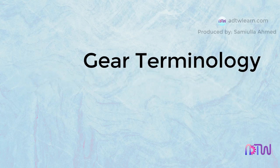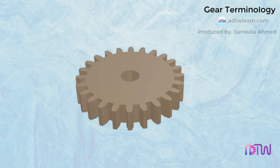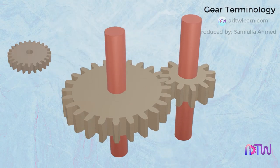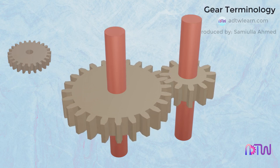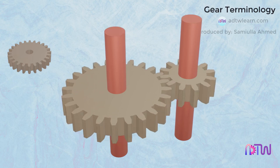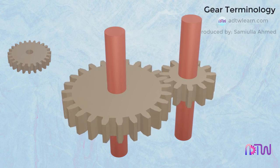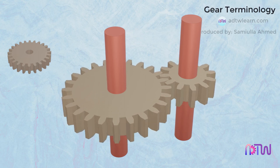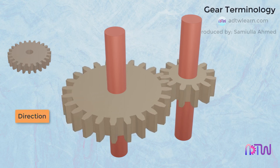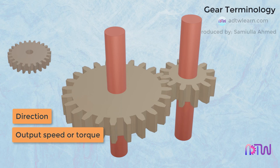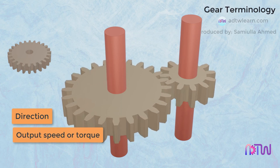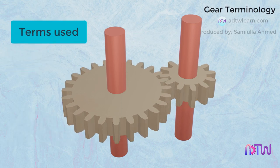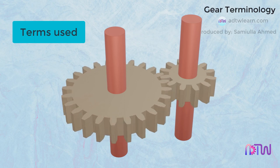Gear Terminology. A gear is a machine element that meshes with other gears to transmit power from one shaft to another. Gears are used to transfer motion and torque between machine elements. Depending on the construction, gears can change the direction of movement, or increase the output speed or torque. In this video, we will understand the terms used to represent different parameters of a gear.